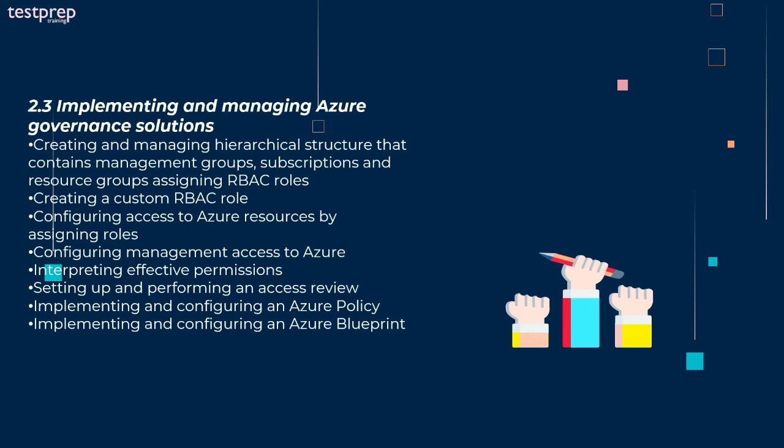Third, implementing and managing Azure Governance Solutions: creating and managing hierarchical structure that contains management groups, subscriptions, and resource groups; assigning RBAC roles; creating a custom RBAC role; configuring access to Azure resources by assigning roles; configuring management access to Azure; interpreting effective permissions; setting up and performing an access review; implementing and configuring an Azure Policy; and implementing and configuring an Azure Blueprint.